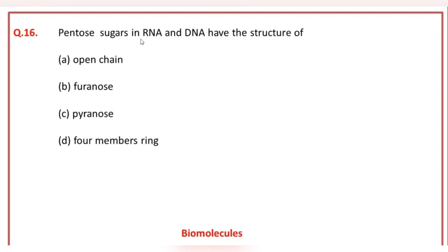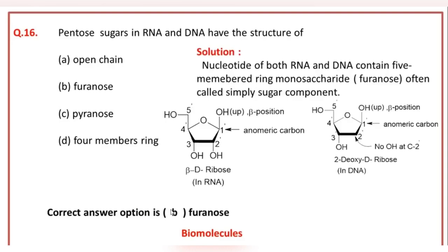Pentose sugar in RNA and DNA have the structure of: the answer option of this question is B, that is furanose.